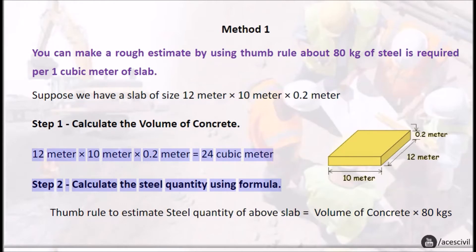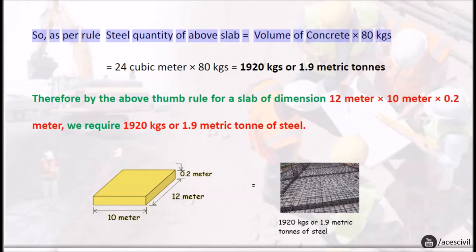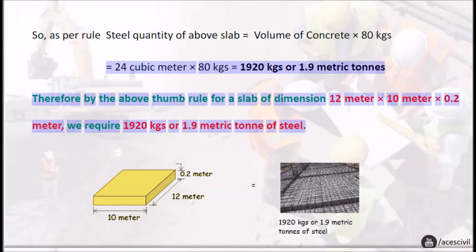12 meter times 10 meter times 0.2 meter equals 24 cubic meter. Step 2: Calculate the steel quantity using formula. Thumb rule to estimate steel quantity of above slab equals volume of concrete times 80 kgs. So as per rule, steel quantity of above slab equals volume of concrete times 80 kgs equals 24 cubic meter times 80 kgs equals 1920 kgs or 1.9 metric tons. Therefore, by the above thumb rule, for a slab of dimension 12 meter times 10 meter times 0.2 meter, we require 1920 kgs or 1.9 metric ton of steel.